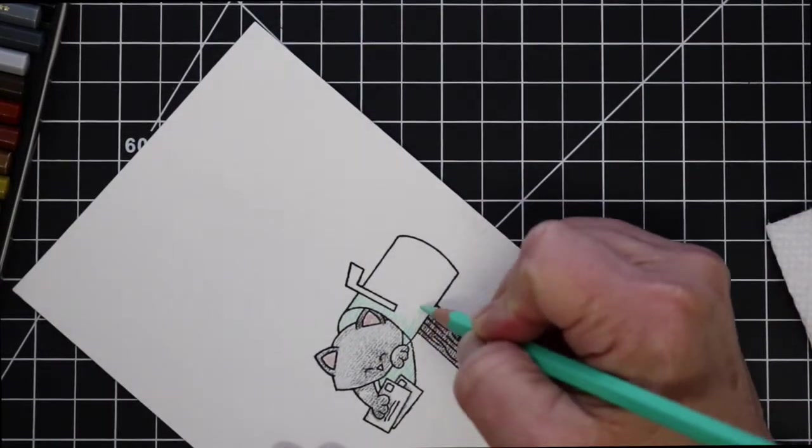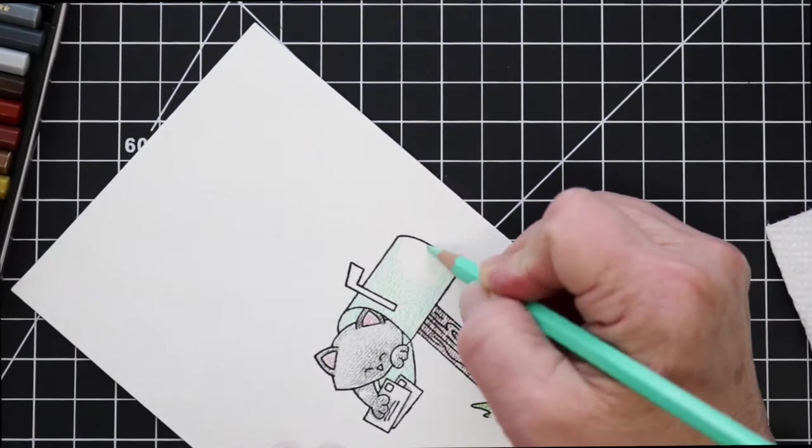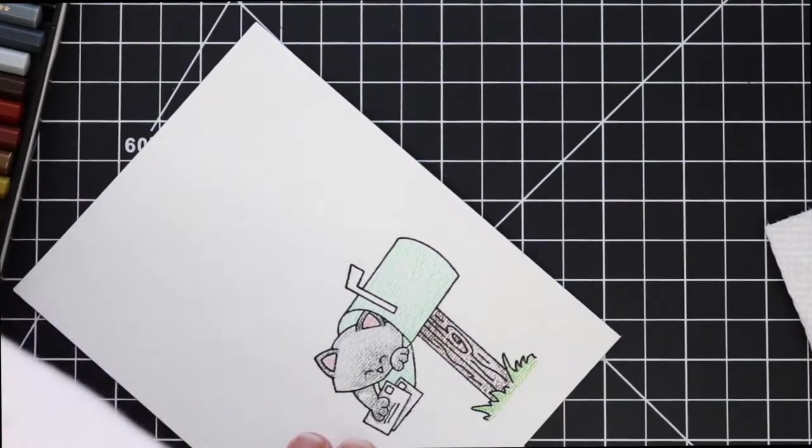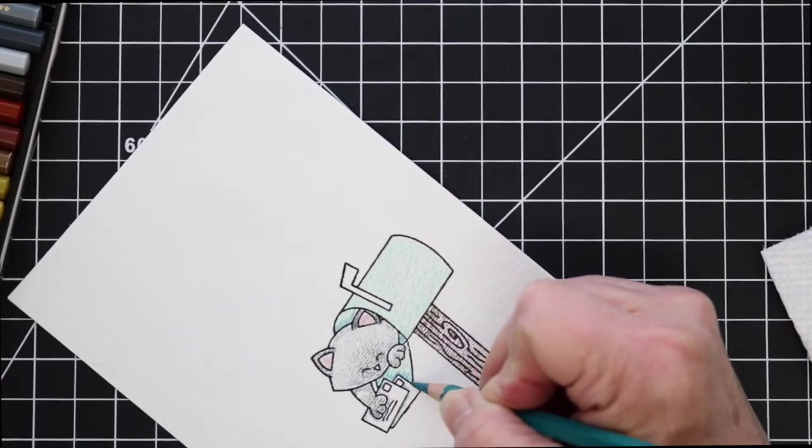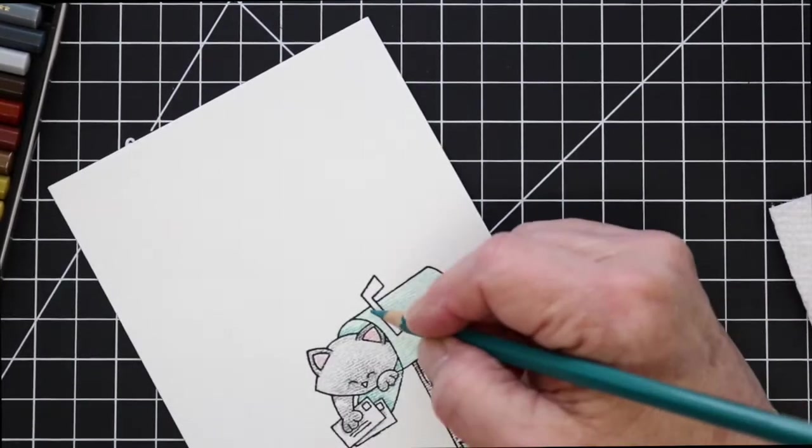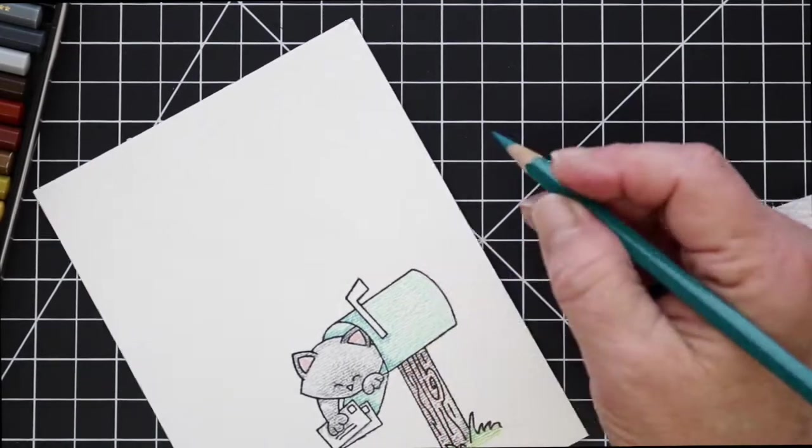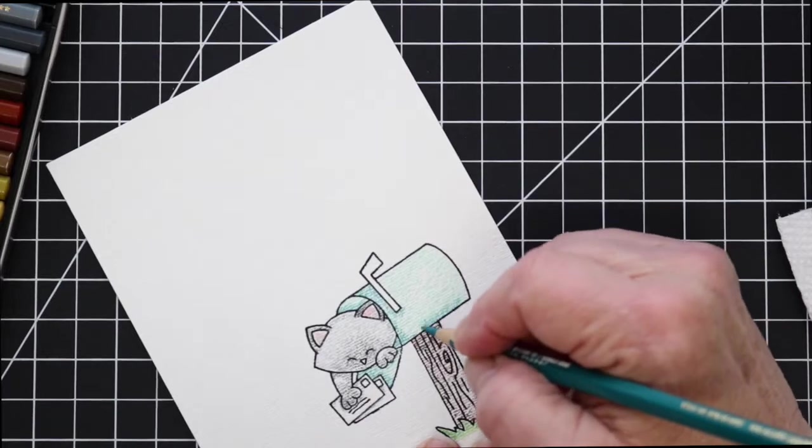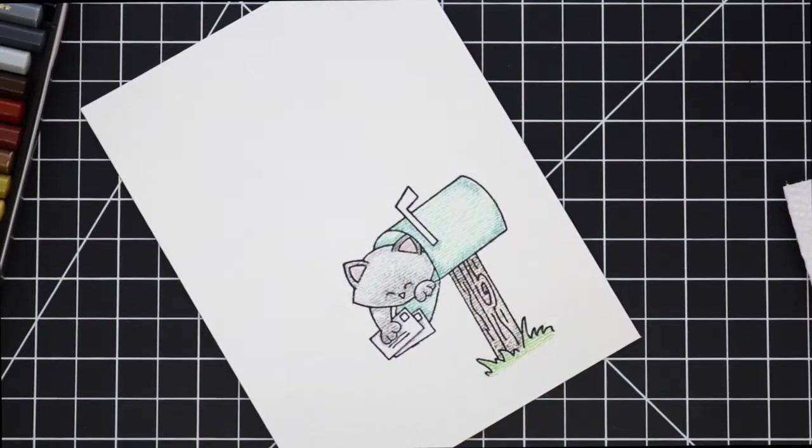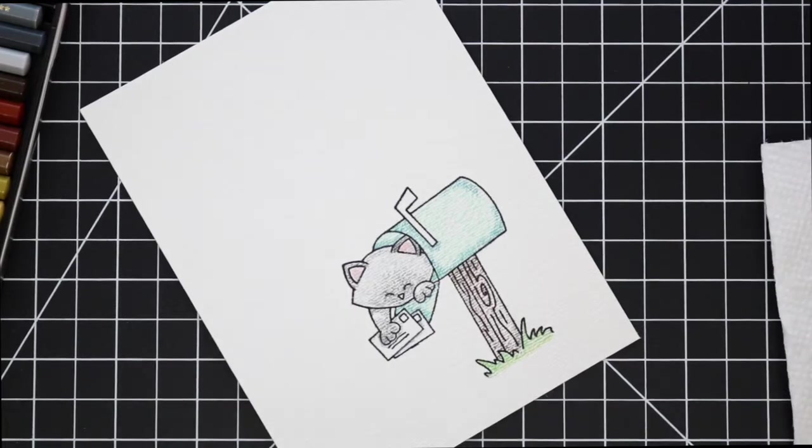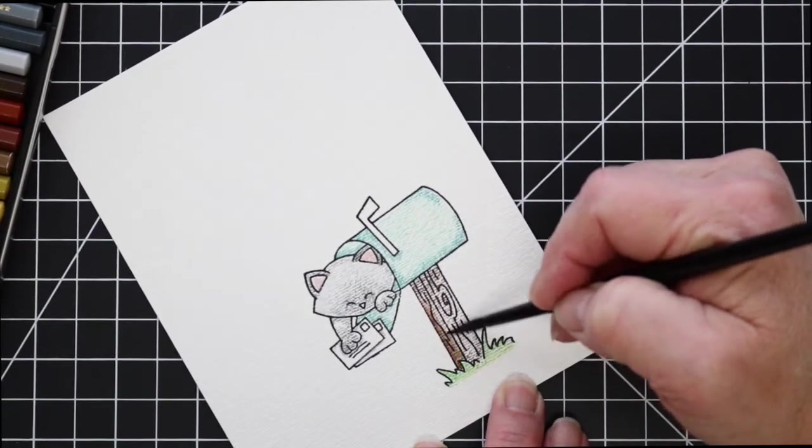I'm coming in with a light blue green to color in the mailbox and then I will come in with a darker one just to pencil in where I think the shadows should be, and now I'm coming in with some water.